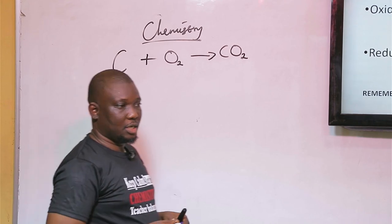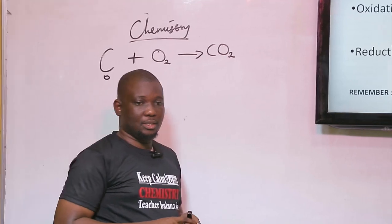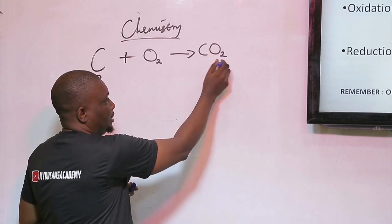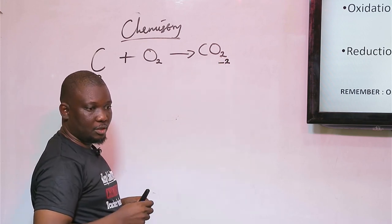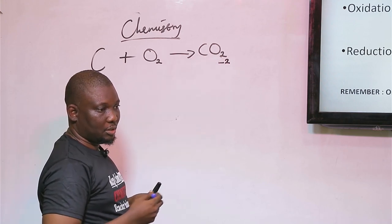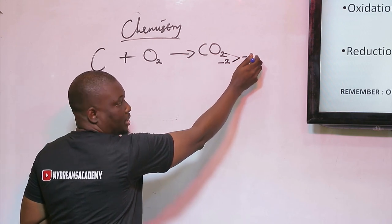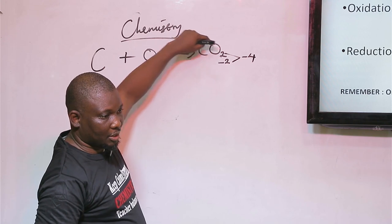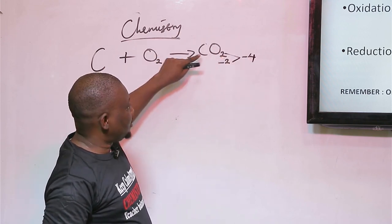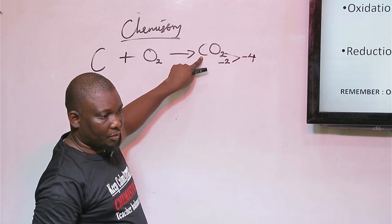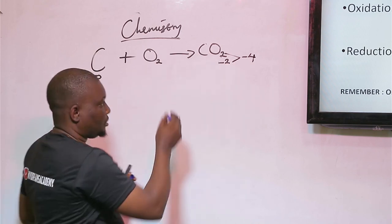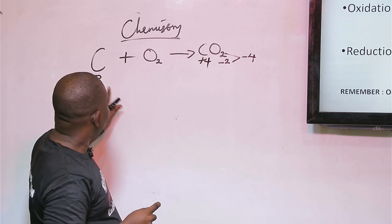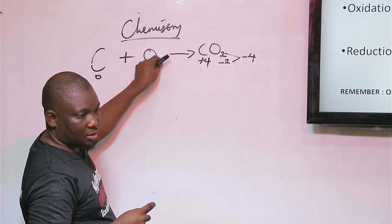There is a set rule that states that the oxidation state of oxygen in its combined state is minus 2. That is for one atom of oxygen. But in this combined state there are two atoms of oxygen, so when you multiply, you get a total of minus 4. Another set rule states that the sum of oxidation states of every atom in a molecule must equal zero. Now that oxygen is minus 4, what must carbon be? Plus 4. So the oxidation state of carbon has changed from zero to plus 4 when it gains oxygen.